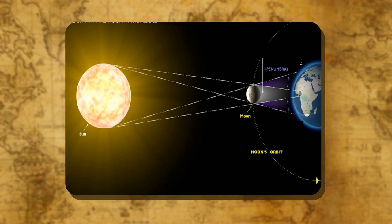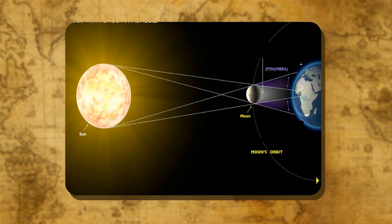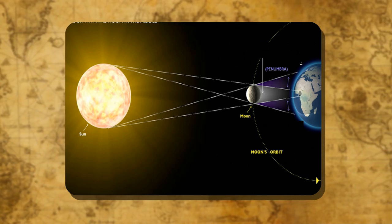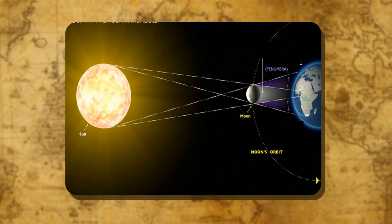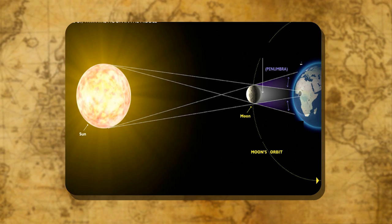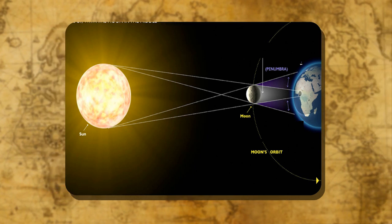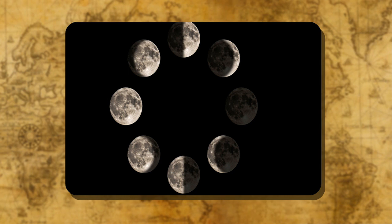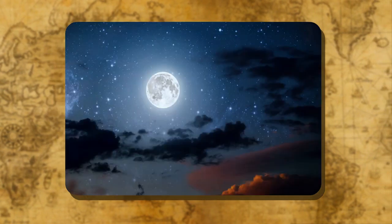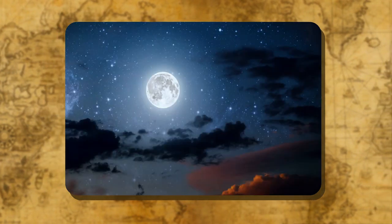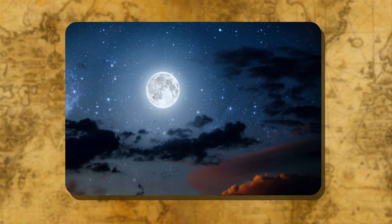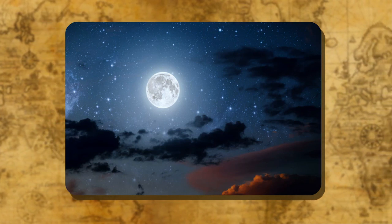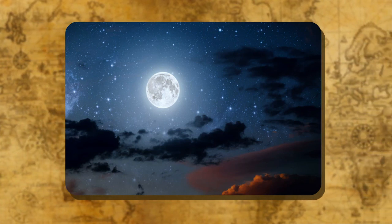New moon: When the moon is between the Earth and the sun, the part of the moon which faces the Earth is in complete darkness — this is called the new moon. Full moon: When the moon shows its fully sunlit surface, this phase is known as the full moon.